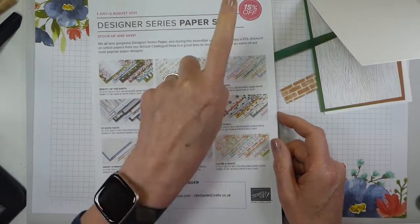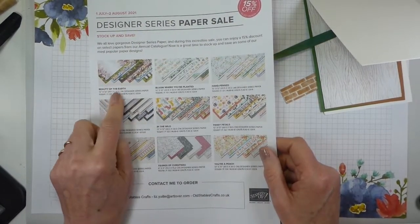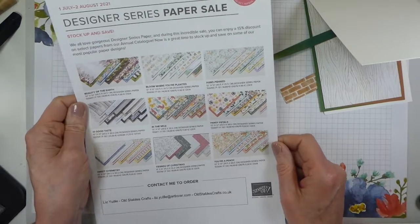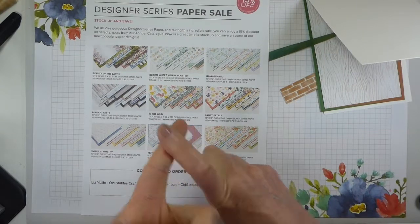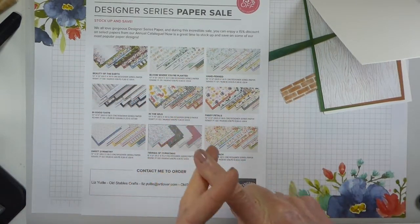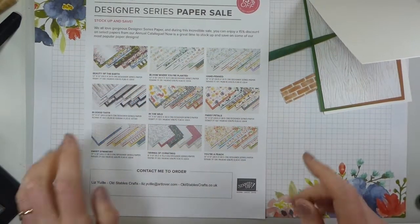All of these are 15% off from the 1st of July to the 2nd of August. So it's basically all of the pattern paper in the annual catalogue that isn't specialty and isn't colour families. Everything else is in the sale.